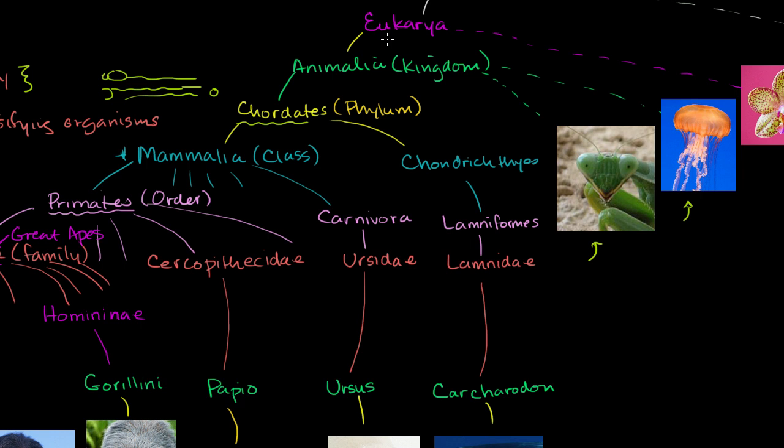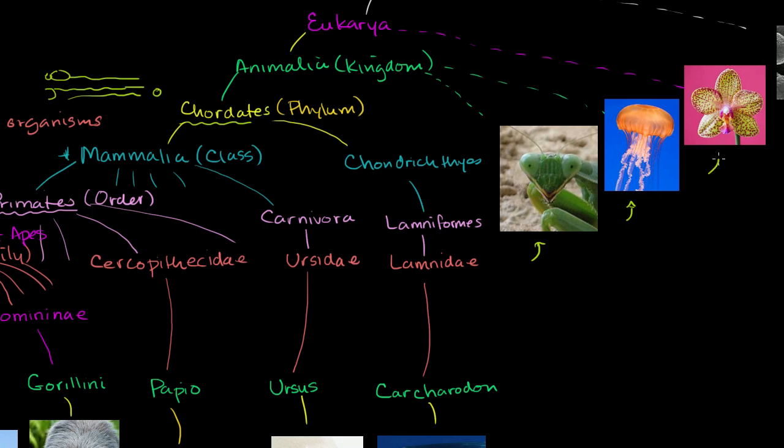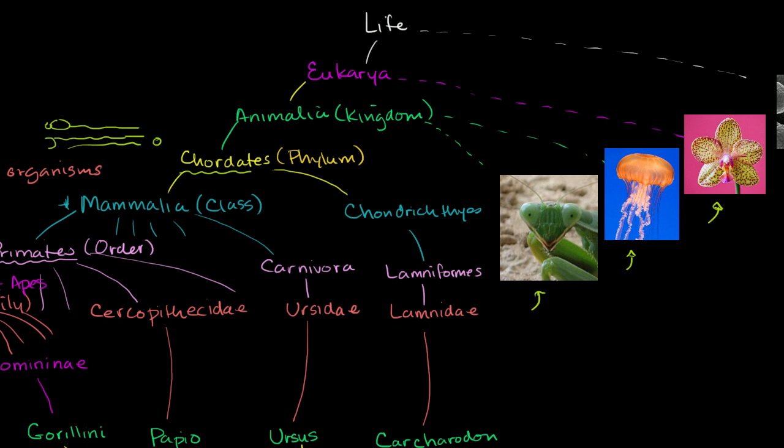These are all organisms that have cells, and inside those cells they have complex structures. So if you're eukarya, you have cells with complex structures. If you're prokarya, you don't have complex structures inside your cell. But other eukarya that are not animals include things like plants. Obviously I'm giving no justice to this whole branch of the tree of life. It could be just as rich or richer than everything I've drawn over here. This is just a small fraction of the entire tree of life.